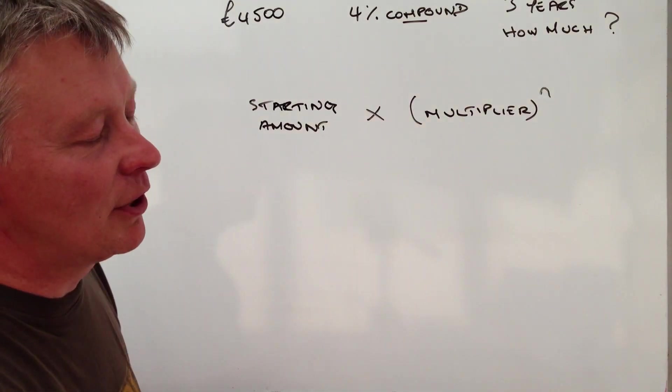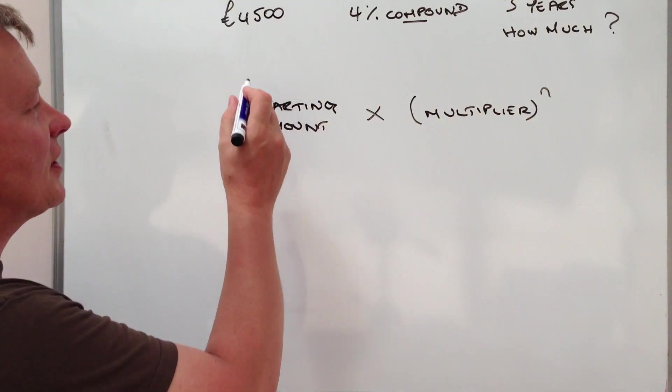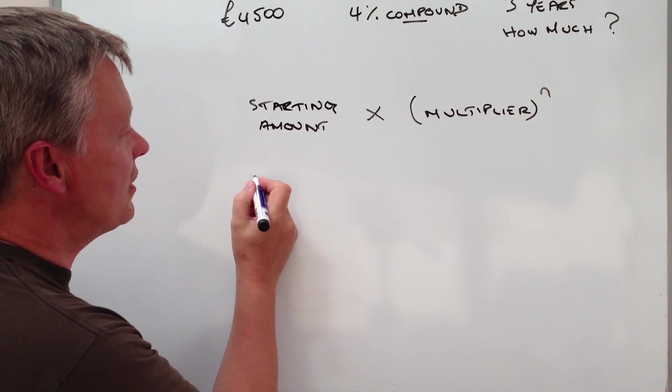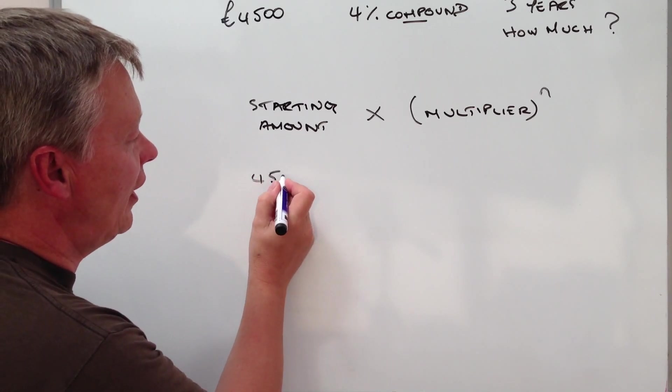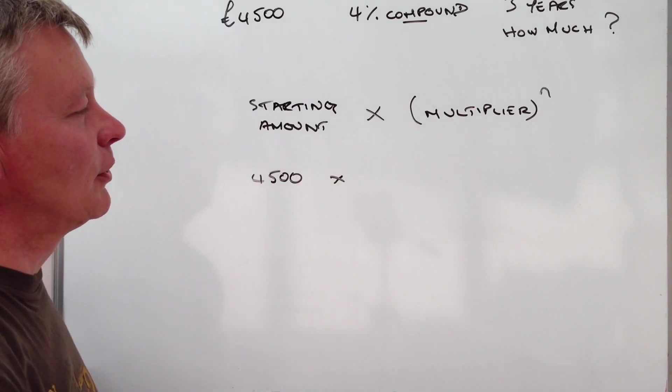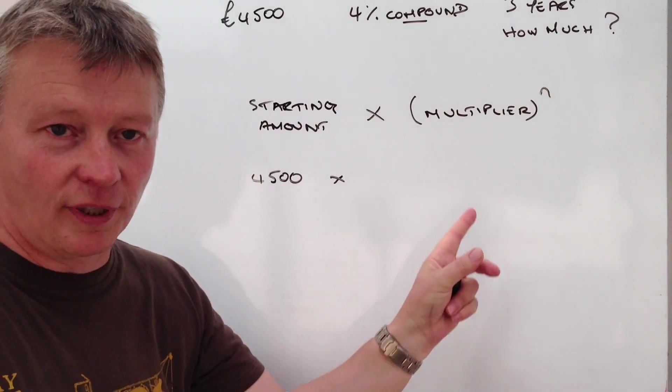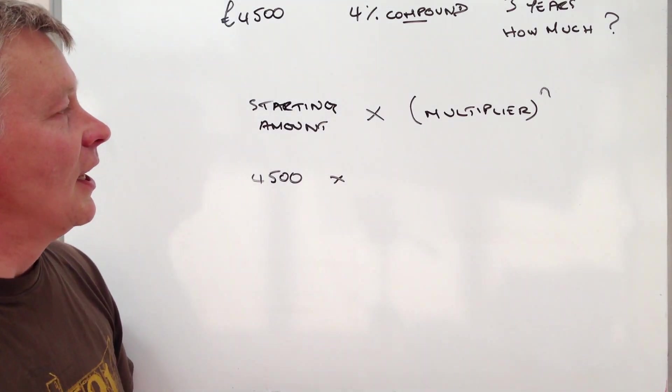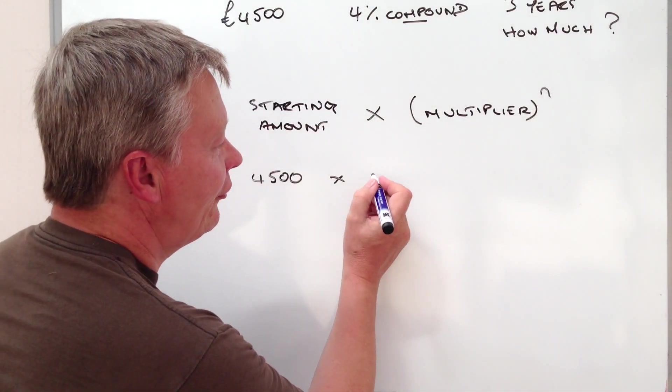So let's start putting some numbers in place. The starting amount is 4,500, and that's going to be multiplied by the multiplier. Well, the multiplier is 1.04.